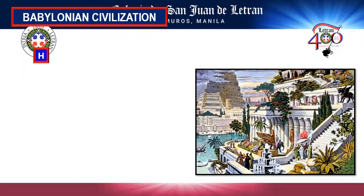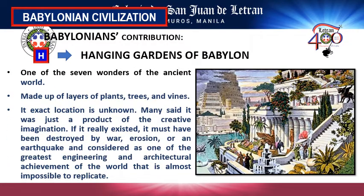Let's now proceed to Babylonian contributions. The letter H stands for the Hanging Gardens of Babylon, considered one of the seven wonders of the ancient world. It was made of layers of plants, trees, and vines. However, its exact location is unknown — some say it was a product of imagination, others say it was destroyed by war, erosion, or earthquake. The Hanging Gardens of Babylon was considered the greatest engineering and architectural achievement of ancient times, almost impossible to replicate.